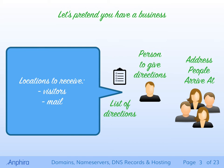Let's pretend that you have a physical business. You have people who arrive at your business. When they arrive, you have someone who gives them directions. In order to give out those directions, this person has to have a list of directions. And once the people have arrived and gone to that person, the person checks the list and gives them directions so they know where to go. For example, visitors might be directed to one location at your business, whereas the mail truck might be directed to deliver mail to a different location within the business.